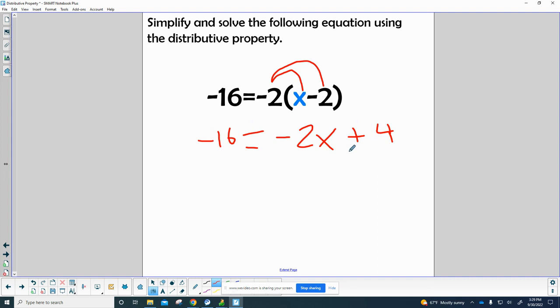Now let's solve like we have been the last few days. We minus 4 from both sides, and negative 16 minus 4 equals negative 20. All of that equals negative 2x. So all I have to do now is divide by negative 2, and I end up with x.